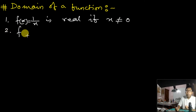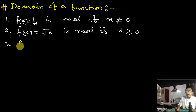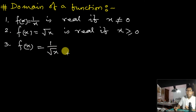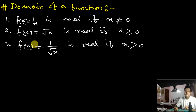Next, suppose you have a function f(x) = √x. It is also real if x is greater than or equal to 0. Third, if you have a function f(x) = 1/√x, it is also real — that means the output of this function is real — if x is greater than 0. We will see a difference between the second and third.